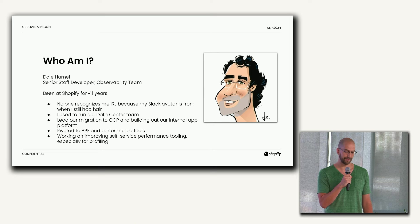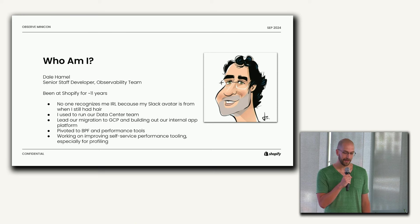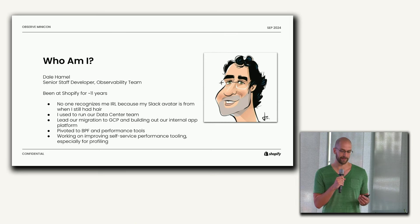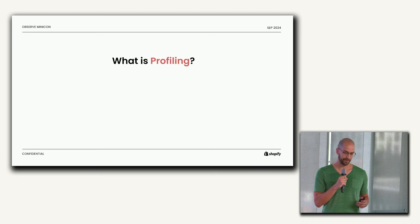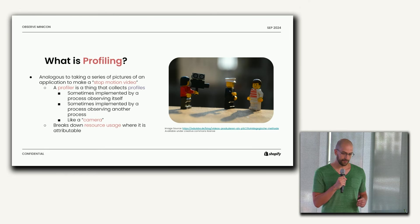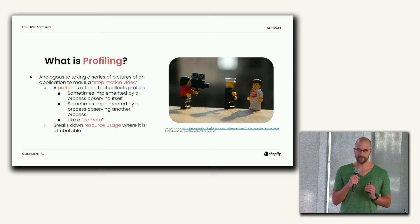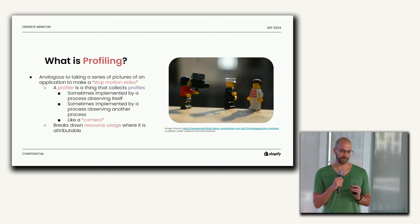Profiling is kind of one of the lesser known signals in observability. Some people forgot to mention it as a pillar, but that's okay. Before diving into all the details, I'm actually going to take a step back and build up what profiling is from first principles. So, what is profiling? I like to use the analogy of profiling as kind of like a stop motion video. In this analogy, the profiler is like a camera.